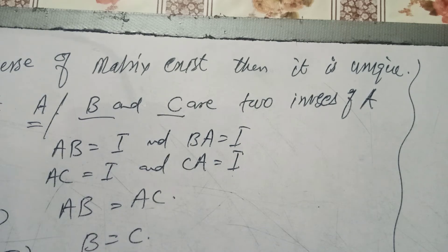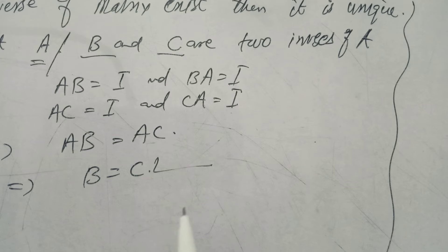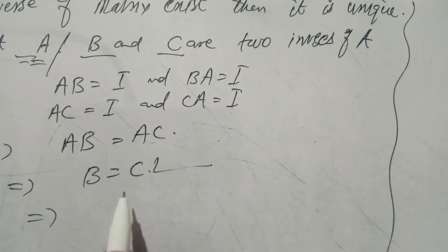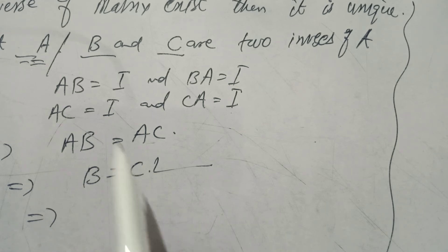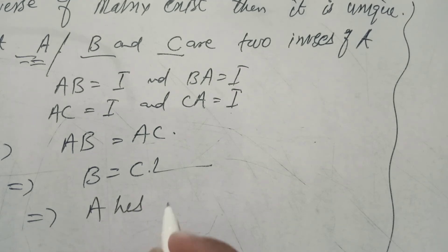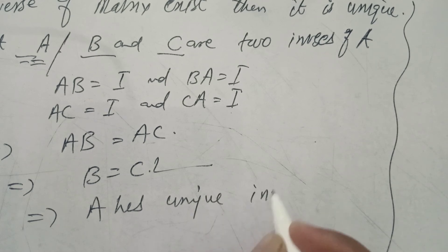We assumed B and C are two inverses of A, but we have shown that B equals C. This implies that matrix A has a unique inverse, because the two inverses we assumed are both equal to each other.